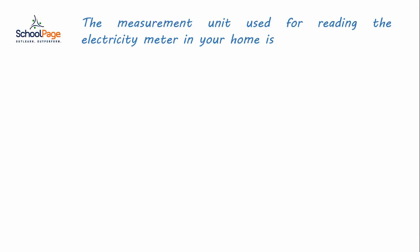The measurement unit used for reading the electricity meter in your home is: option A, ampere; option B, volt; option C, kilowatt-hour; option D, coulomb.